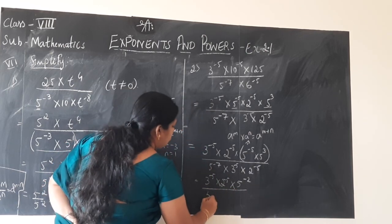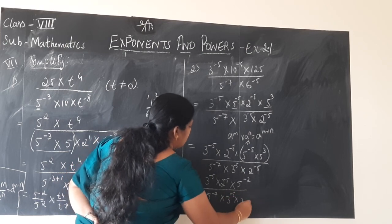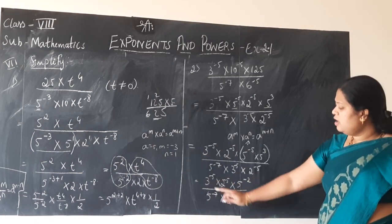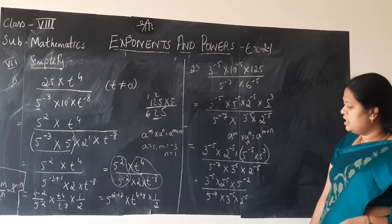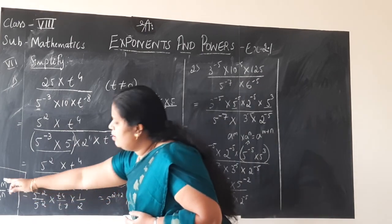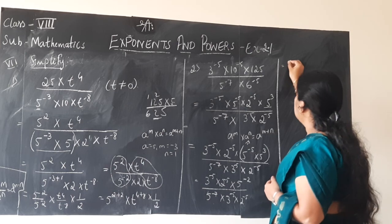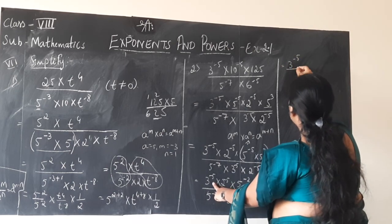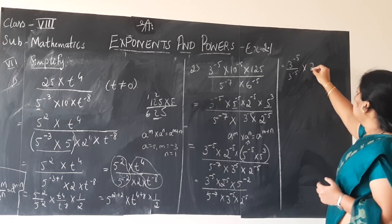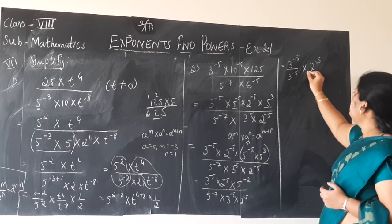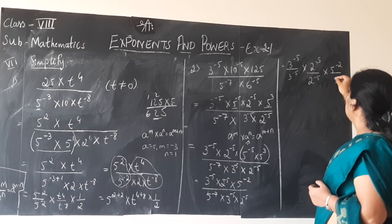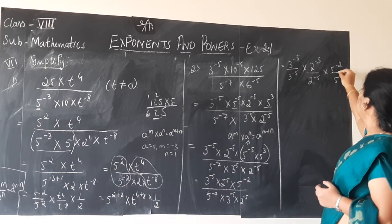Denominator terms as it is: 5 power minus 7, 3 power minus 5 into 2 to the power minus 5. Now both in numerator and denominator we have numbers with same base — 3 and 3, 5 and 5, 2 and 2. Group them and write in the next step to apply the law a power m divided by a power n. So grouping: 3 to the power minus 5 divided by 3 to the power minus 5, into 2 to the power minus 5 divided by 2 to the power minus 5, into 5 to the power minus 2 divided by 5 to the power minus 7.